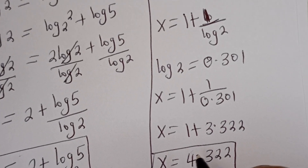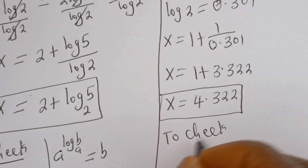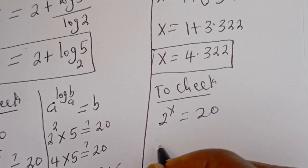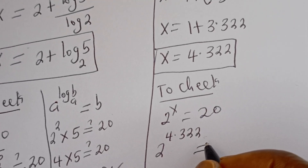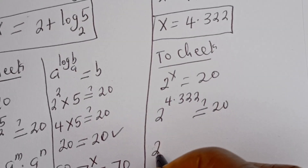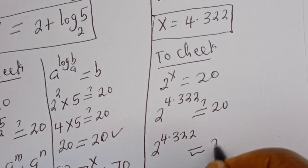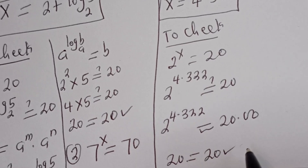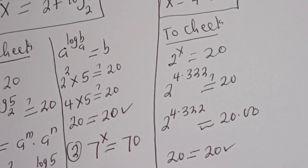We can check to confirm: we have 2 to the power of s equal to 20. Substituting s equals 4.322, we get 2 to the power of 4.322, which is approximately equal to 20.00. Therefore the left-hand side 20 equals the right-hand side 20, which is true. I hope you enjoyed the video. Thank you for watching — please don't forget to like, share, comment and subscribe to my channel. Bye bye.